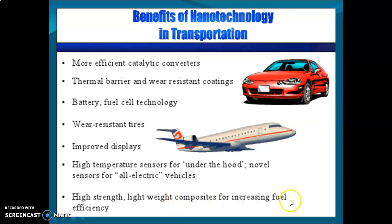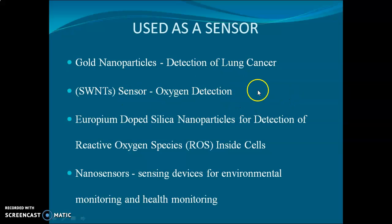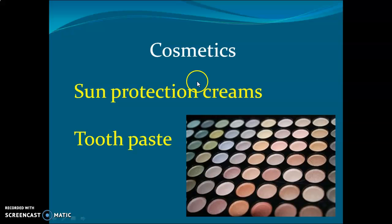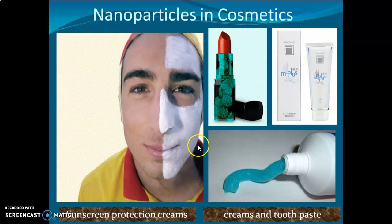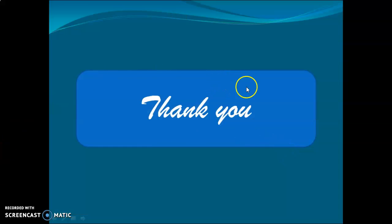Benefits of nanotechnology in transportation include more efficient thermal barriers, improved battery and fuel technology, wear resistance, improved displays, high-temperature sensors, high-strength lightweight composites for increased fuel efficiency. Various nano sensors exist for lung cancer detection, oxygen detection, reactive oxygen species sensing, environmental monitoring, and health monitoring. Everyday products like sunscreen creams and toothpaste also use nanotechnology. Thank you all.